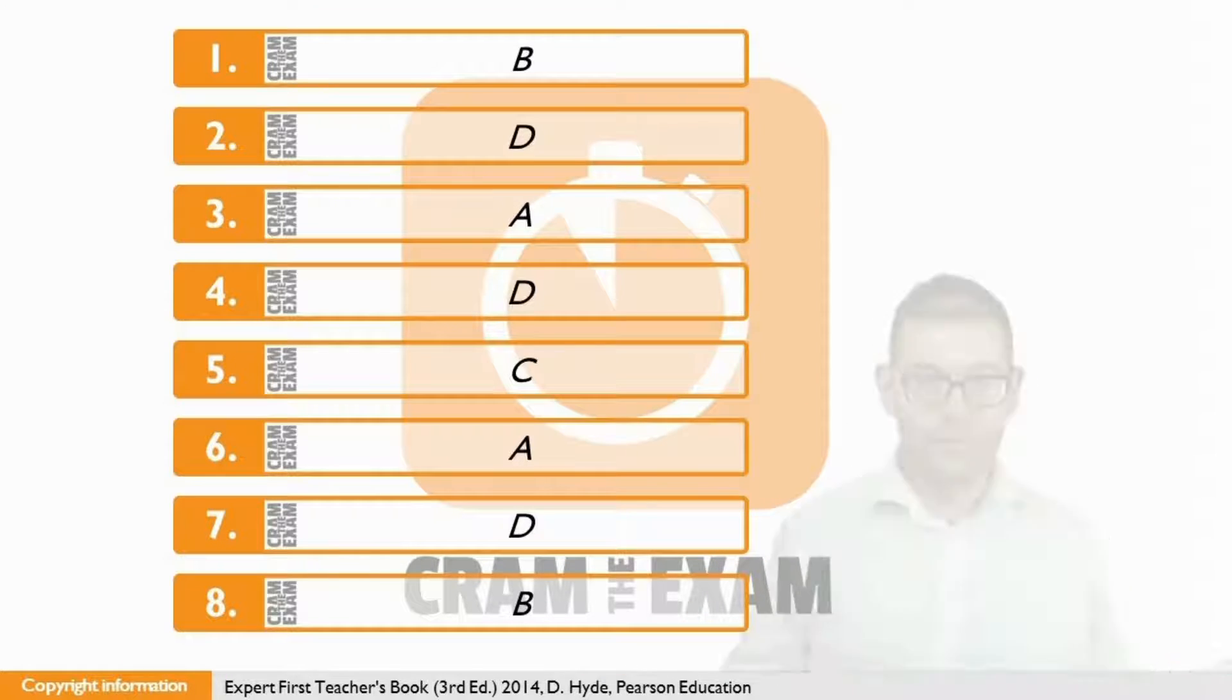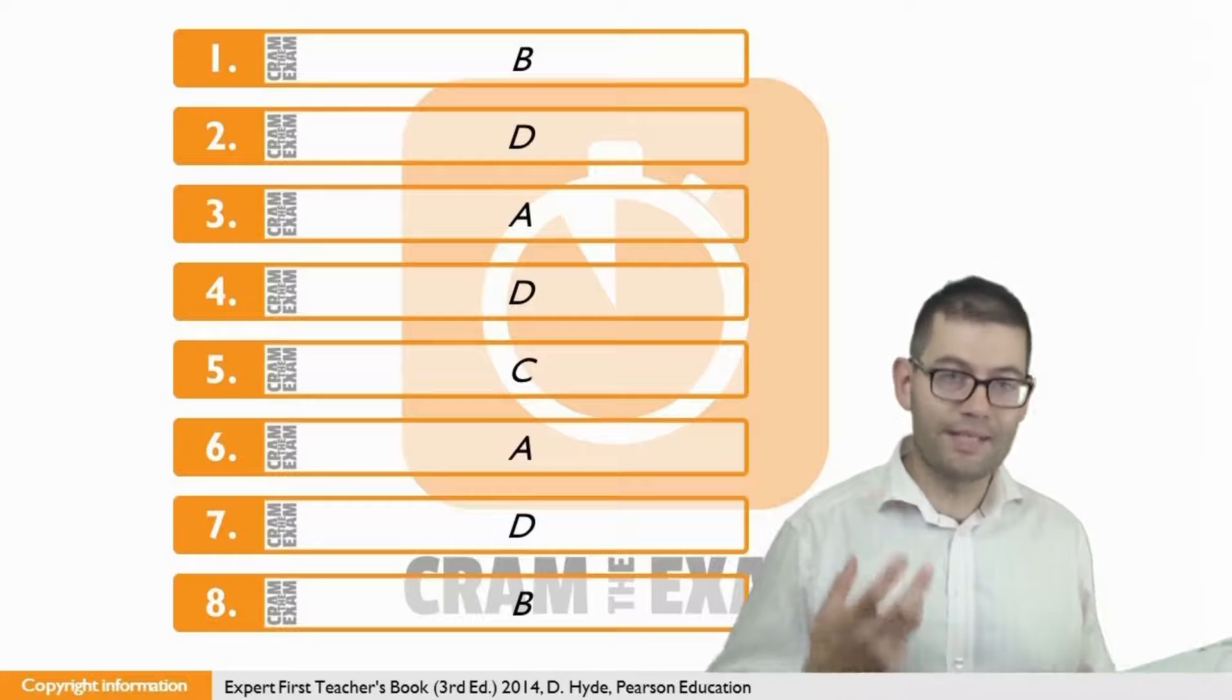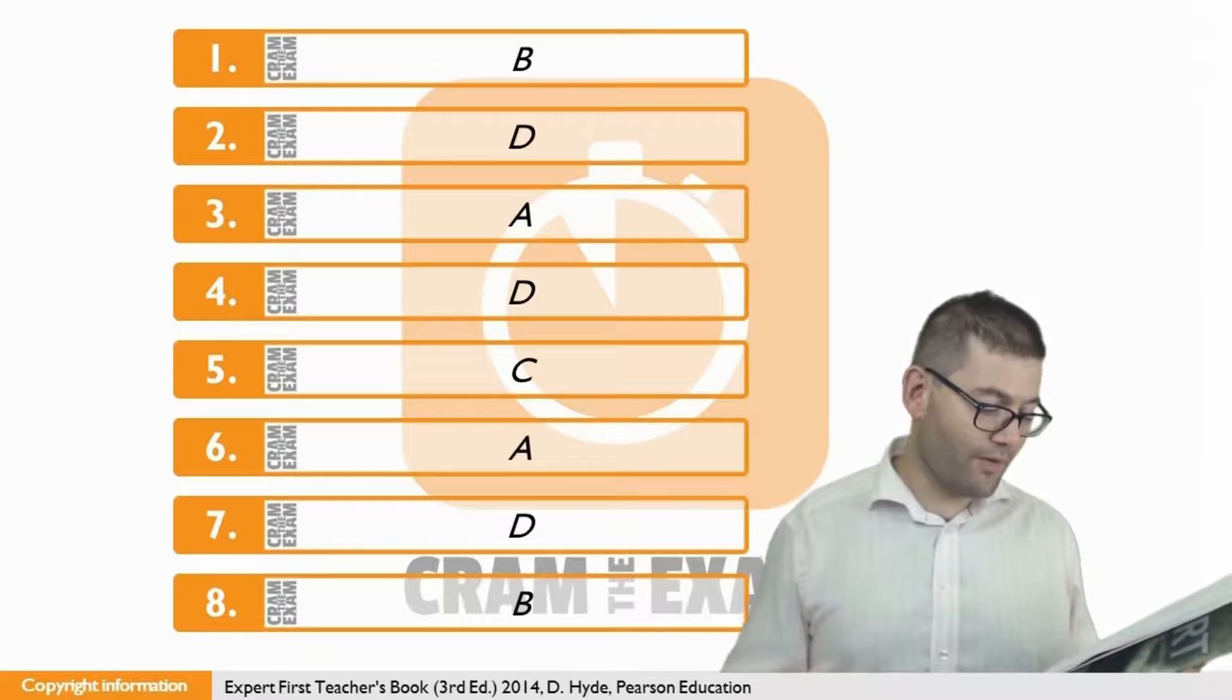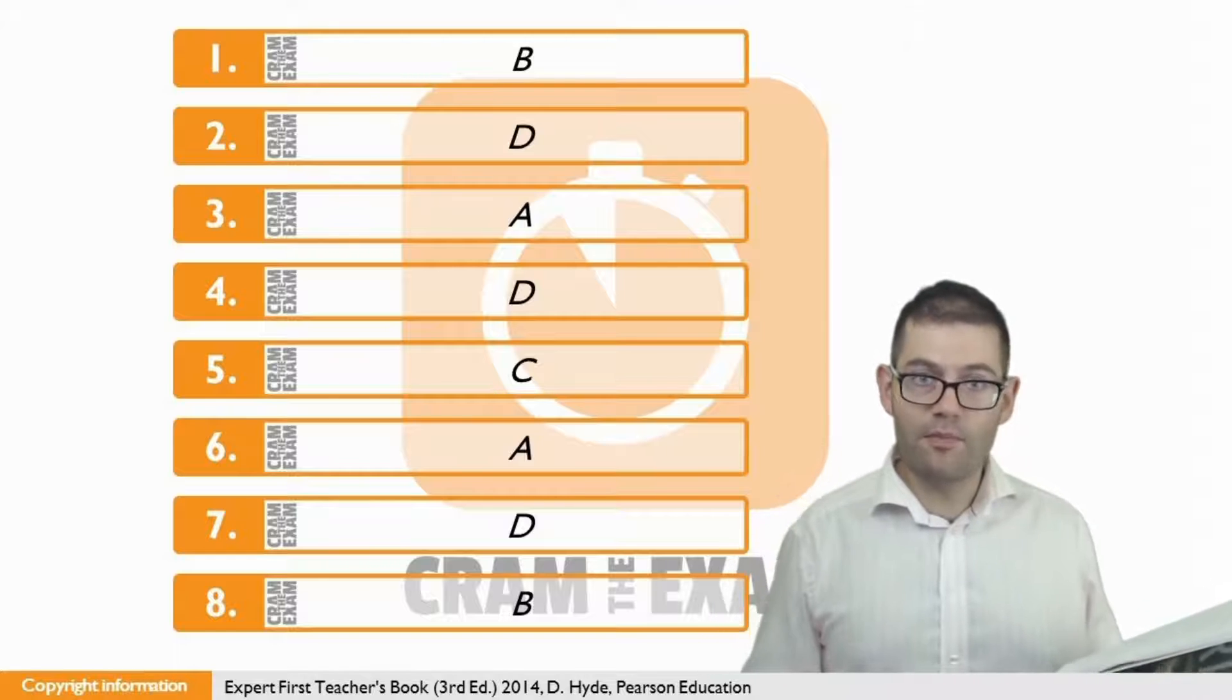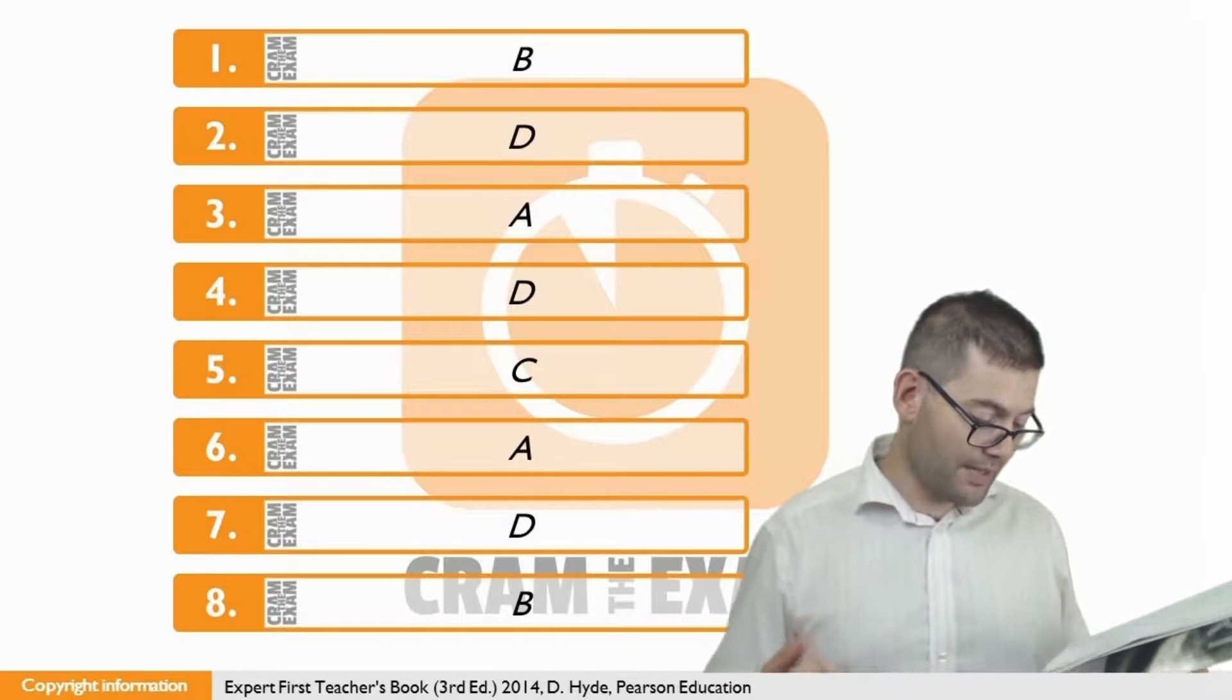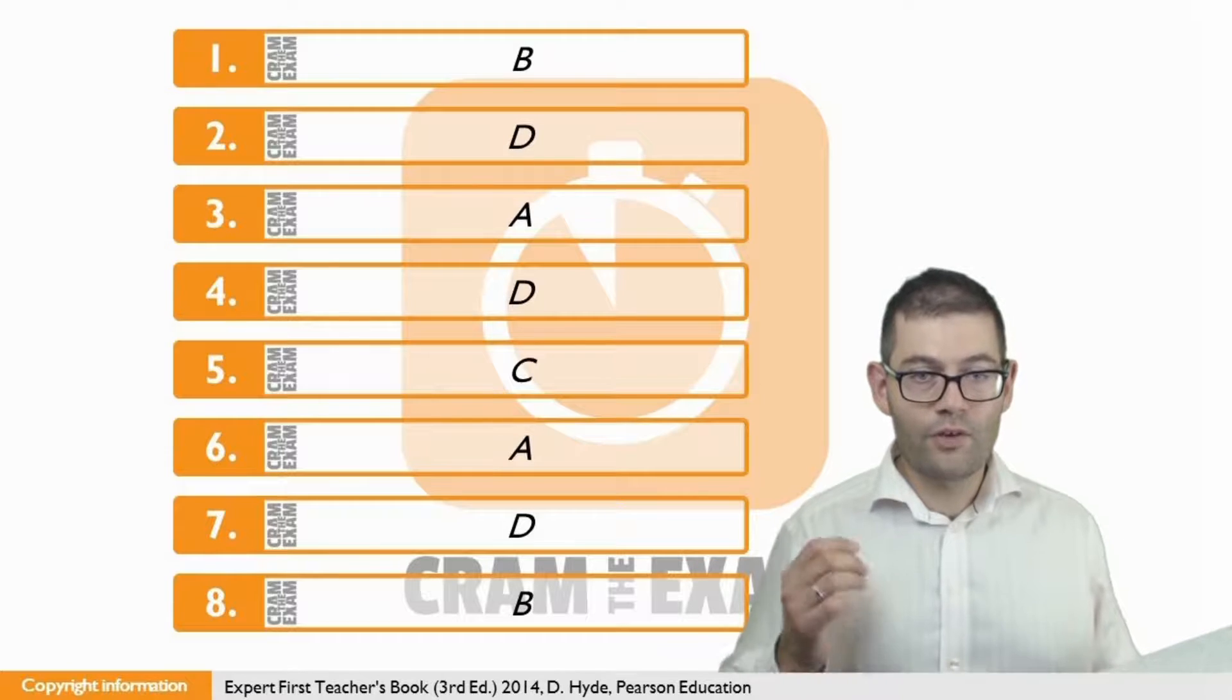For question five, what we need is a phrasal verb which basically means the same as results in. This results in around 4.45 kilometers, 193 calories burned. So which one of these phrasal verbs means the same as results in? Gets around? No. Gives over? No. Makes up? No. Works out? C, yes.